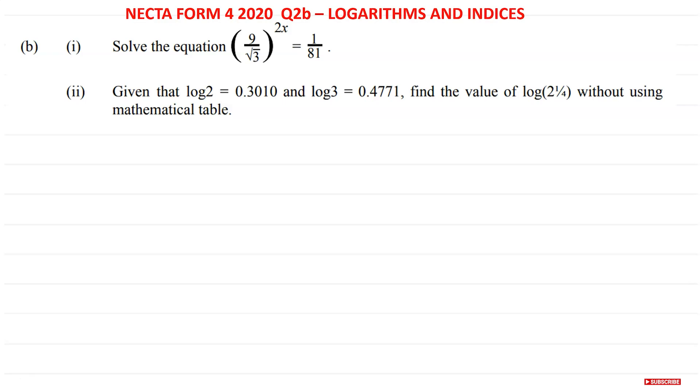Let's solve part 1(i). We're told 9 over root 3, everything here to the power 2x, is equal to 1 over 81, and we need to solve. Solving means you need to find the unknown, which is x in this case. So let's rewrite that: we have (9/√3)^(2x) = 1/81.